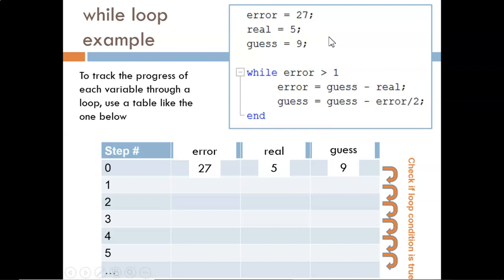Now, the code reaches the while statement, and we need to evaluate the condition. From the table, we see error currently is 27. This is greater than 1, so the condition is true, and we enter the loop for the first time. Then, each of these commands are executed. Error equals 9 minus 5 or 4.